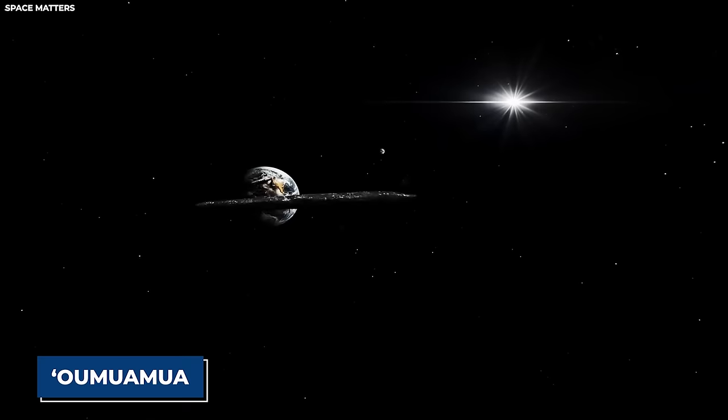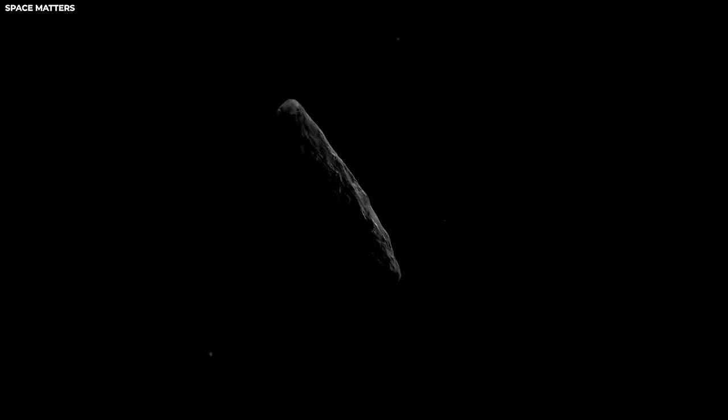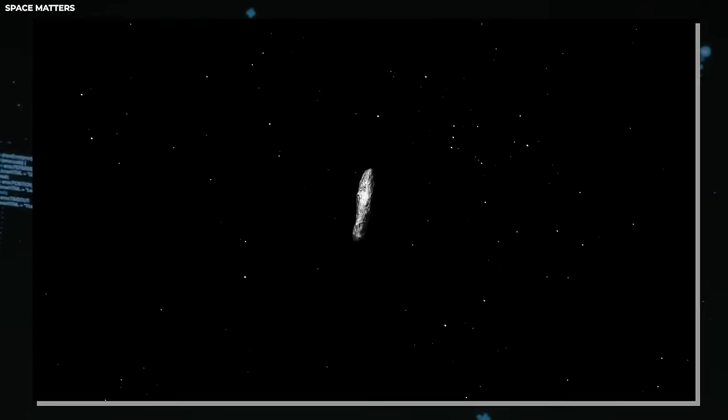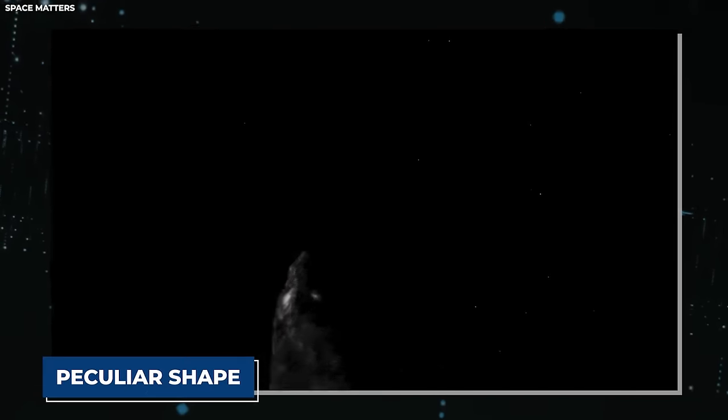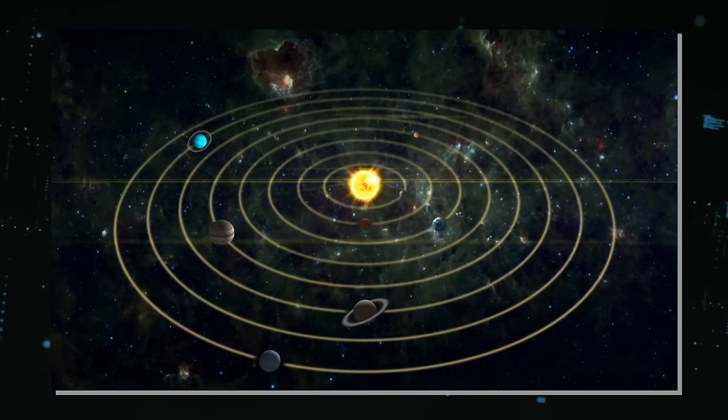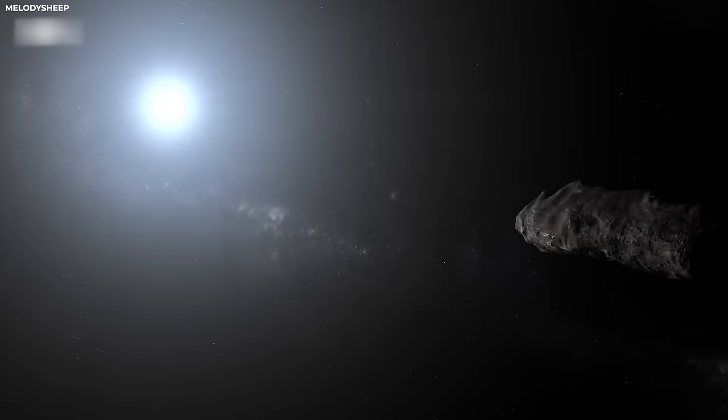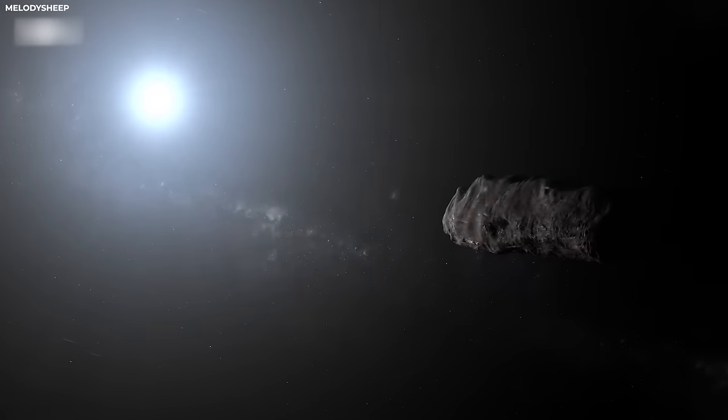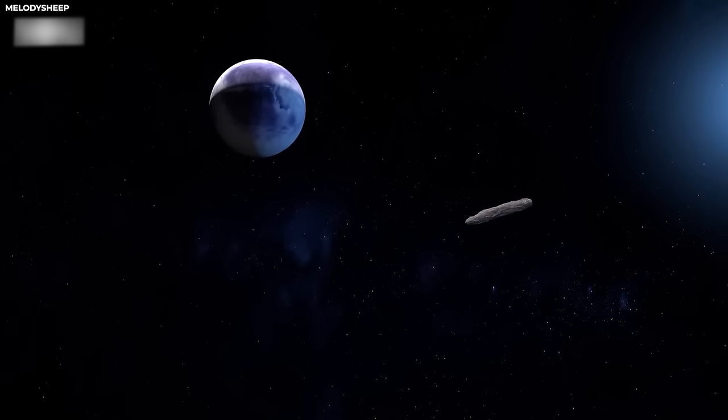Its very name, Oumuamua, derived from Hawaiian, translates poetically as A Messenger from Afar Arriving First, hinting at its cosmic significance. In the autumn of 2017, this cosmic nomad traversed the inner solar system, drawing attention not only for its peculiar shape, but also for its origin beyond our own sun's dominion. Dubbed 1I/Oumuamua by astronomers, the designation 1I denoted its status as the inaugural interstellar interloper to be identified within our solar confines.